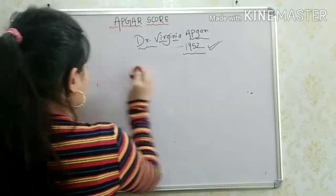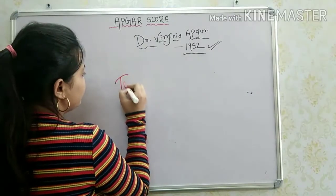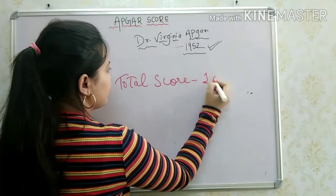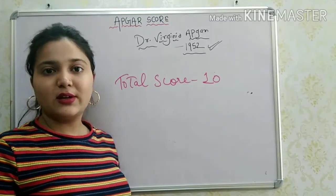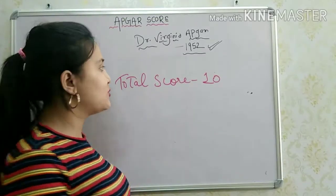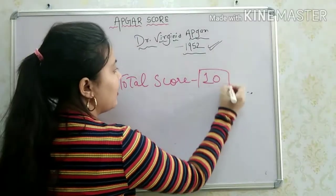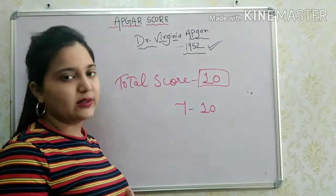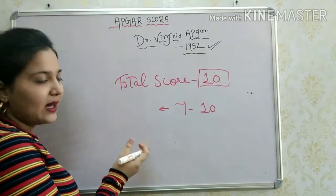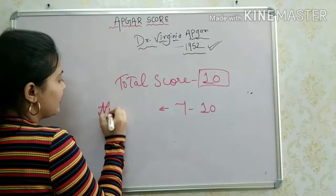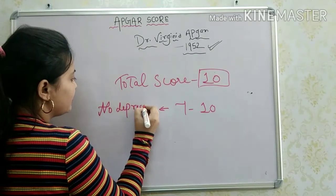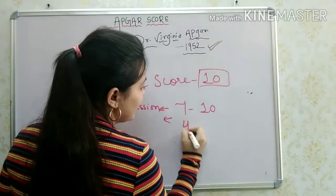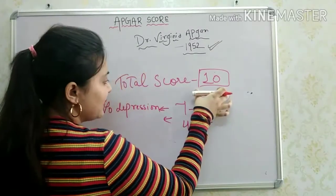The total GAR score is 10. If the calculation is 7 to 10, the score indicates no depression.